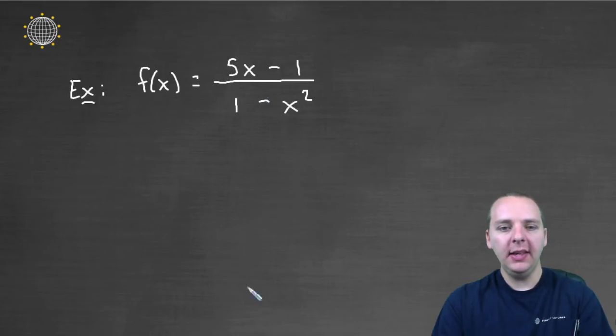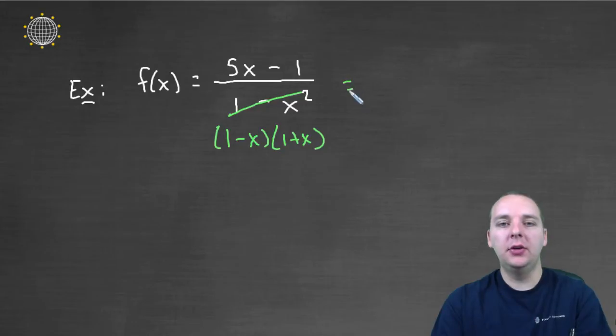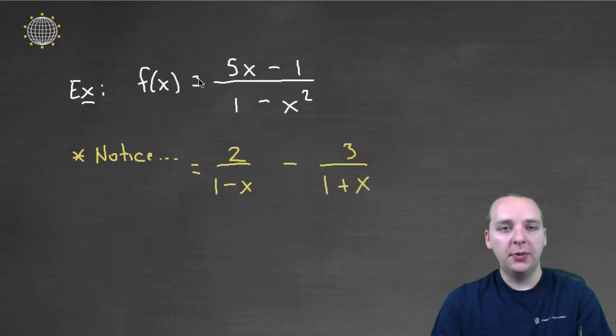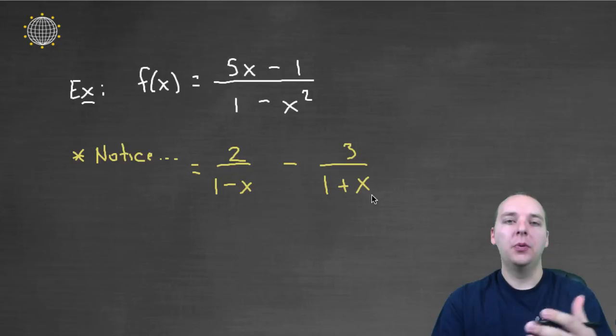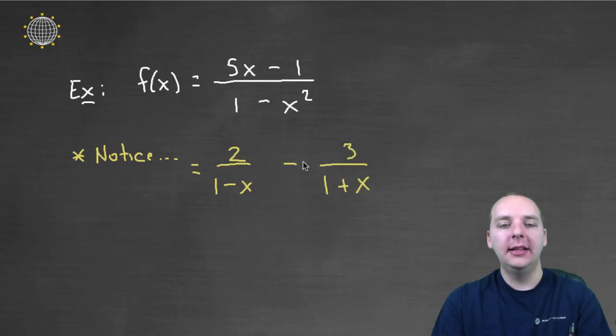You look at this guy and if you notice that this denominator right here factored as (1 - x)(1 + x), hopefully you would realize that you can do partial fraction decomposition on this guy and actually decompose it into a couple of different fractions, couple of different rational expressions. So here we go. I went ahead and did this. Notice that this guy would be equal to 2/(1 - x) - 3/(1 + x). Now how did I get that? Well on some scratch paper I did partial fraction decomposition and I decomposed it into these two smaller pieces.